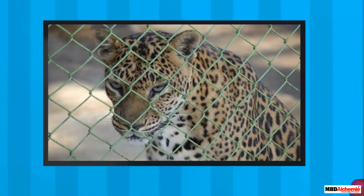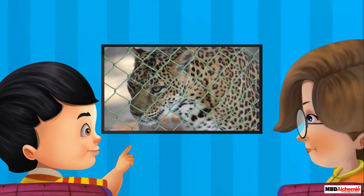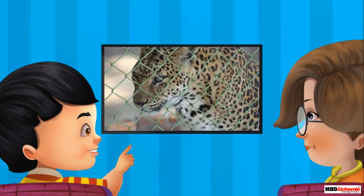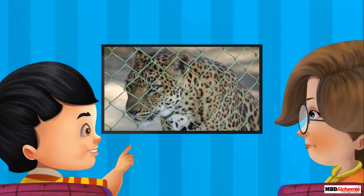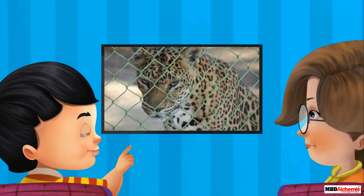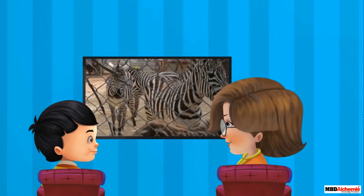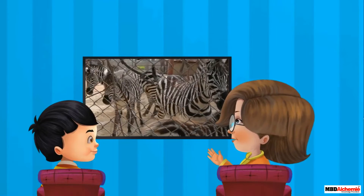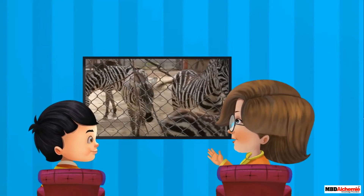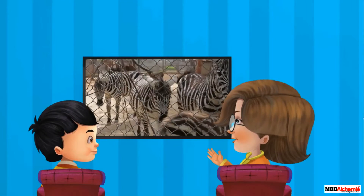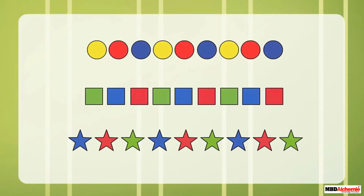Sid points to the TV screen and asks his mother if these are a kind of patterns. Ria tells him that he is correct — these are patterns formed by repetition of colors alternately.